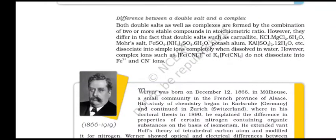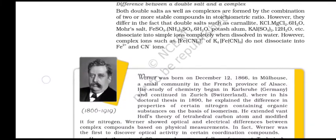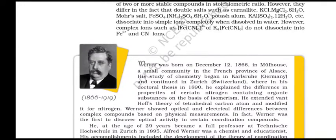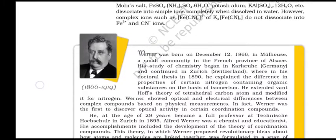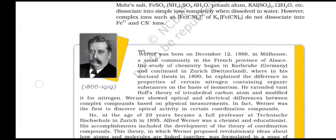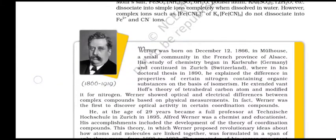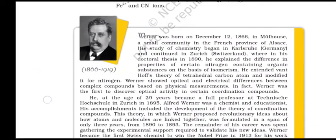The distinction between a double salt and a complex: both double salts and complexes are formed by the combination of two or more stable compounds in stoichiometric ratio. However, they differ in that double salts such as carnallite KCl·MgCl2·6H2O, Mohr's salt FeSO4·(NH4)2SO4·6H2O, and potash alum KAl(SO4)2·12H2O dissociate into simple ions completely when dissolved in water. However, complex ions such as [Fe(CN)6]4- of K4[Fe(CN)6] do not dissociate into Fe2+ and CN-.